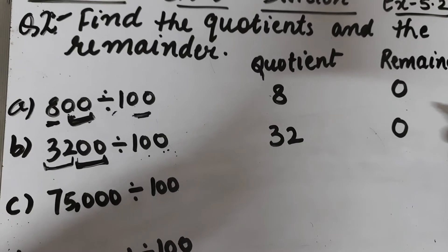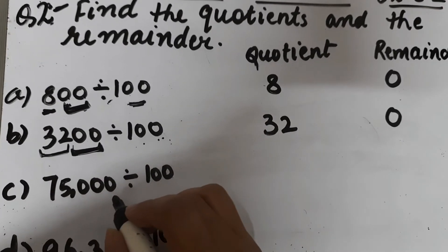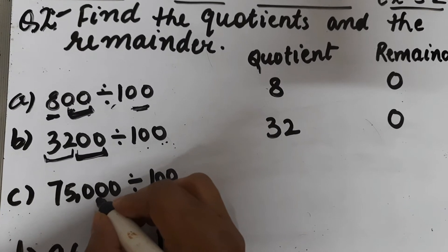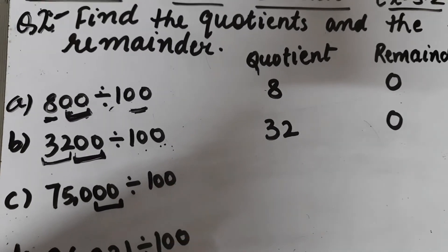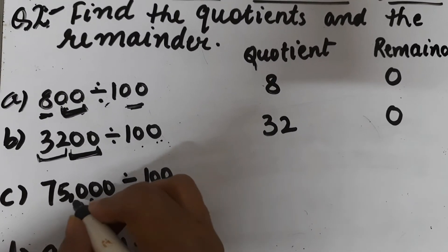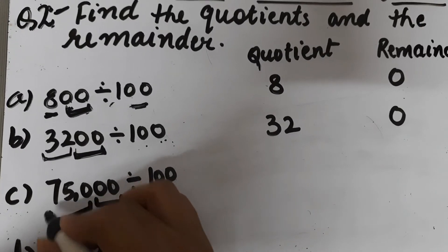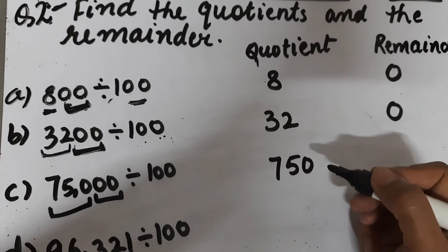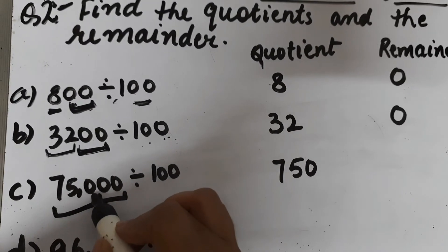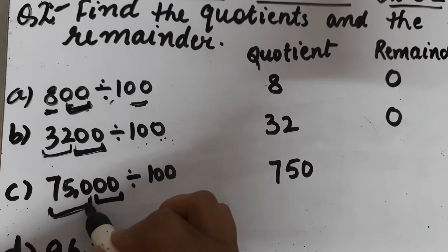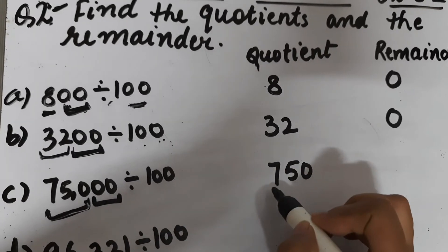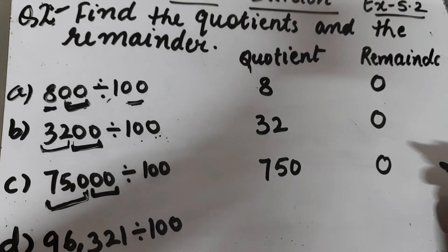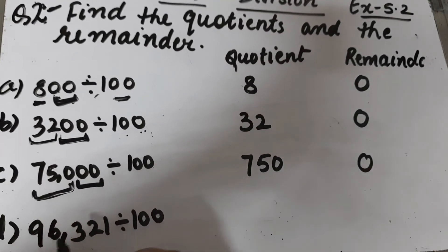Now part c is 75000 divided by 100. The number formed by the ones and tens place is the remainder, and the rest of the digits will be the quotient. So the quotient will be 750 and the remainder will be 0.